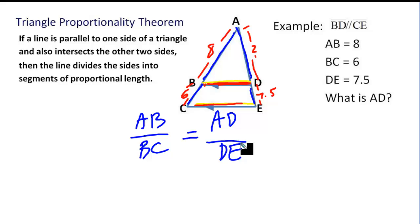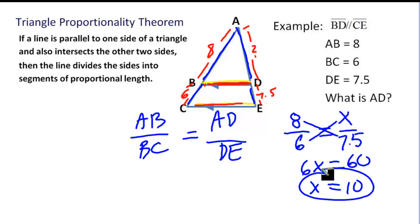Now if we actually put in the numbers we're given, AB is 8, BC is 6, AD we don't know, I'm going to call it X, and DE is 7.5. If you cross multiply, you get 6X equals 8 times 7.5 is 60. So X, which in this case is the side length they're asking us for, is just 10. And you've answered the question.